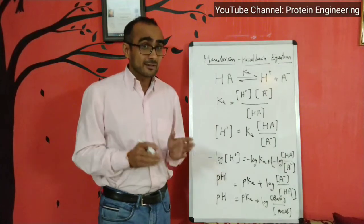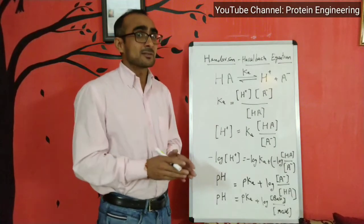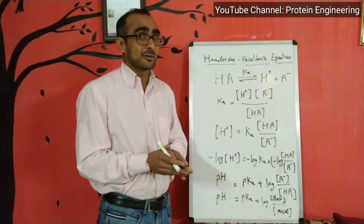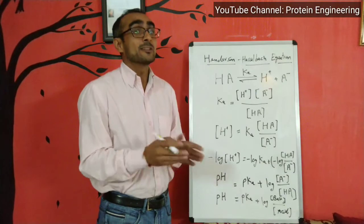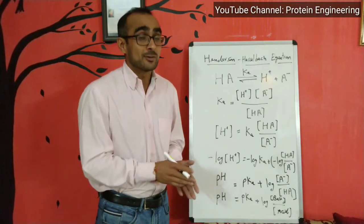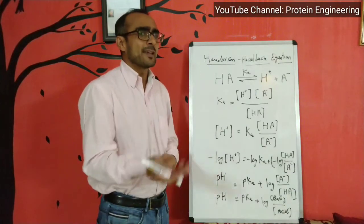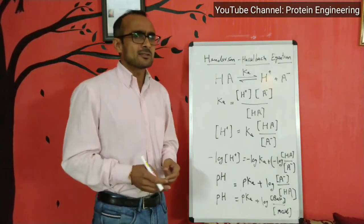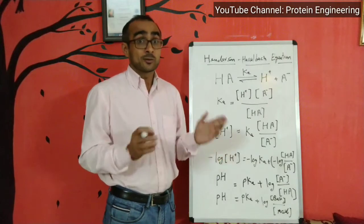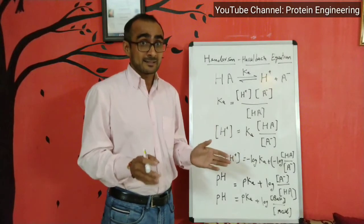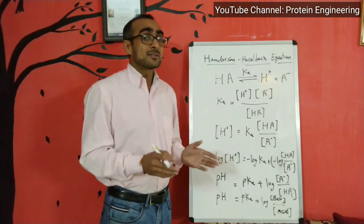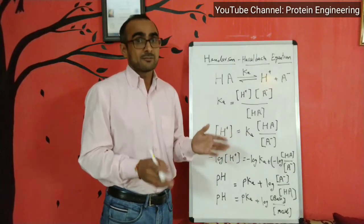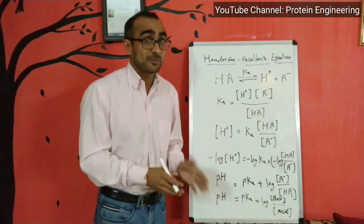This equation basically relates the concentration of acid and base in a solution with its pH value. That's why when you make a buffer of a constant pH, you apply this equation in order to calculate the concentration of the components which are making the buffer.